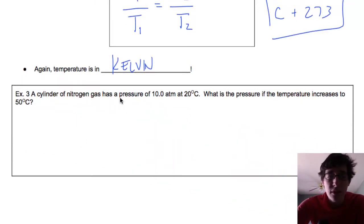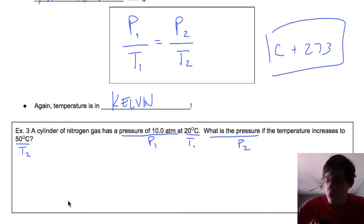So a cylinder of nitrogen gas has a pressure of 10 atmospheres, so this is pressure one, at 20 degrees, so temperature one. What is the pressure, so pressure two, if the temperature increases to 50 degrees, so temperature two.